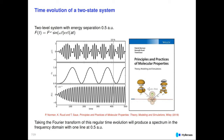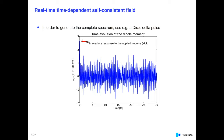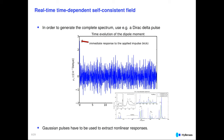This can be done in the real-time domain, where we propagate the electron density in the presence of a time-dependent electric field and then do a Fourier transform. The induced dipole moment — as in the case of the SF6 molecule — can be Fourier-transformed to obtain an X-ray spectrum.